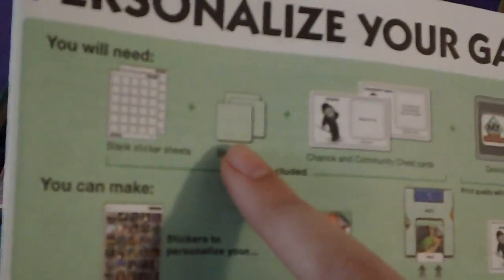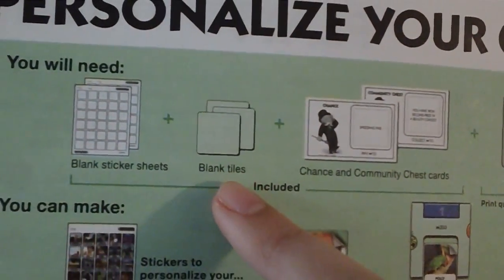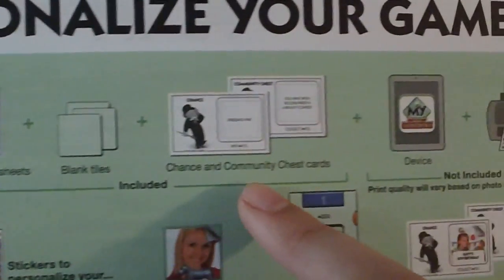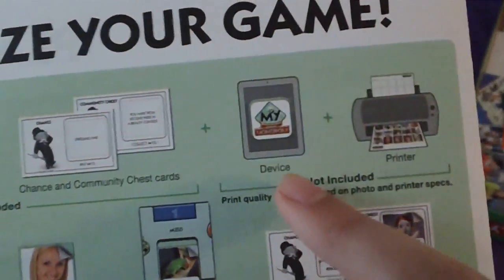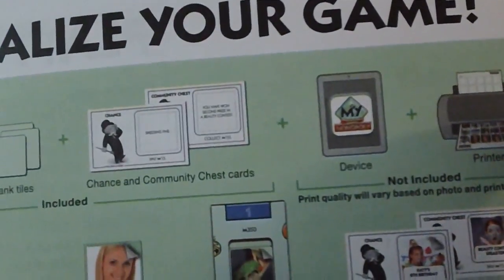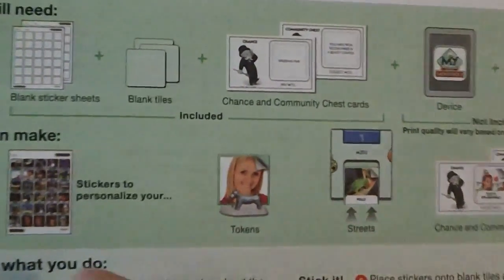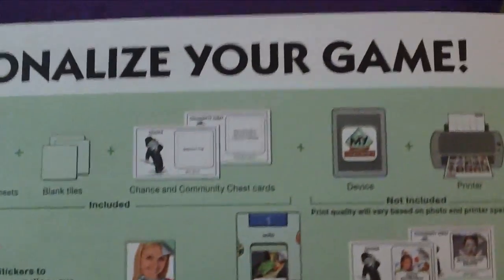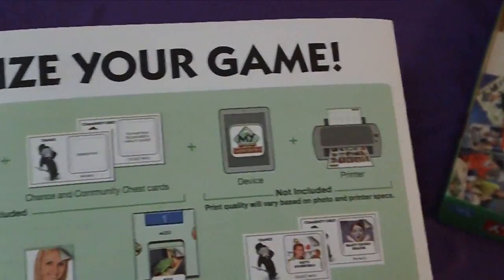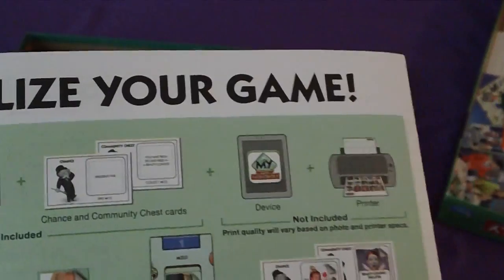Here's the personalization part, and it tells you how to do everything. You need the blank sticker sheets, the blank tiles, the chance and community chest cards, your device, and a printer. Then you make the stickers and you can put them onto the tokens, the streets, and the chance and community chest cards.